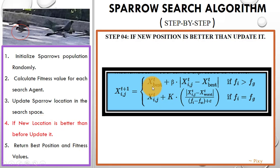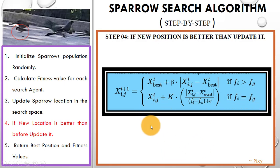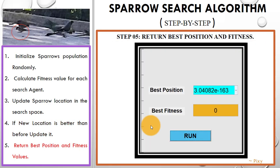You can see here — this is the best position, this is the current best, this is the current fitness value for the individual, this is the worst fitness value for the individual, and this is the global best. Using this we will update the final position for each search agent in the search space, and then we will return the best position and the fitness value. You can check the link in the description box for the MATLAB code.